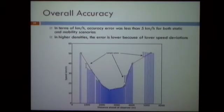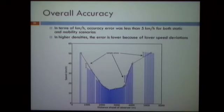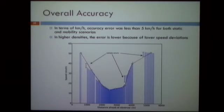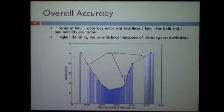With regard to accuracy, we measured the accuracy error in terms of kilometers per hour. For all static and mobility scenarios, the accuracy was less than five kilometers per hour. In higher densities the error is even lower because of lower speed deviations — for instance, in a traffic jam vehicles practically don't move, so we can have a better estimation of the speed profile. We calculated this by connecting the spots included in the traffic map and measuring the difference between the actual speed of the vehicles and the projected speed when connecting these points.